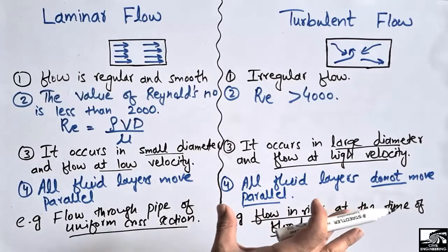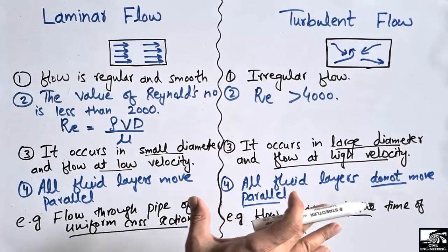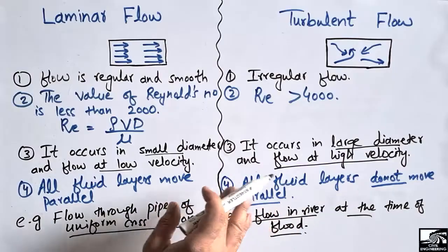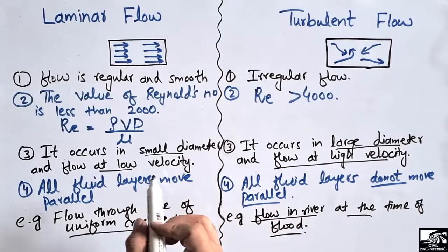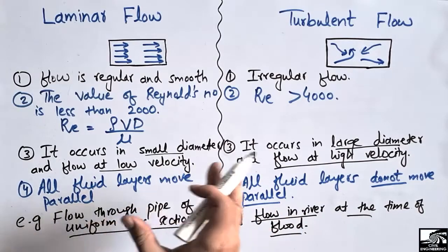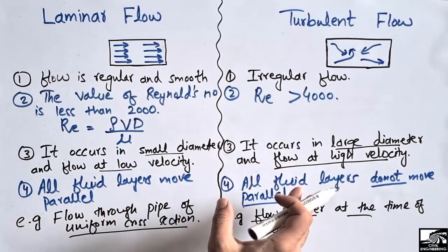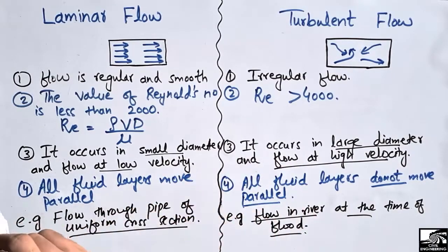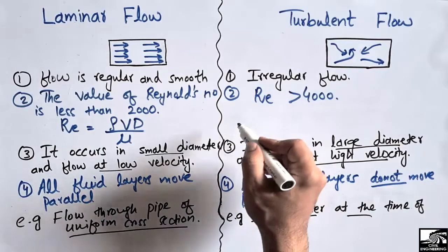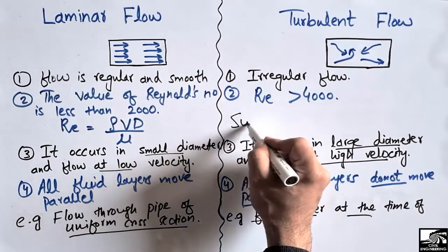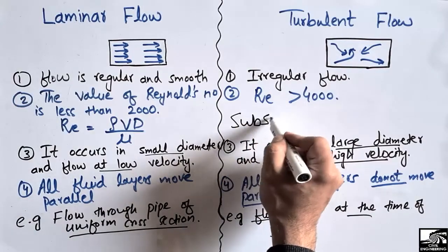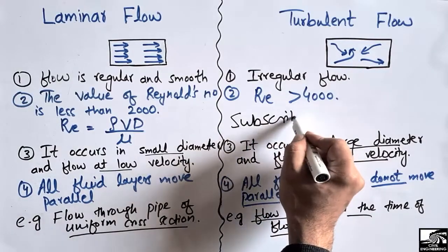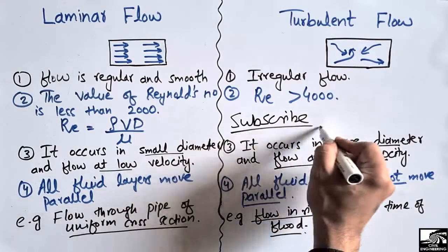These were the main characteristics and examples of laminar and turbulent flow. Hope you guys understand, and don't forget to subscribe to our channel for DC7 Engineering videos. Thank you for watching.